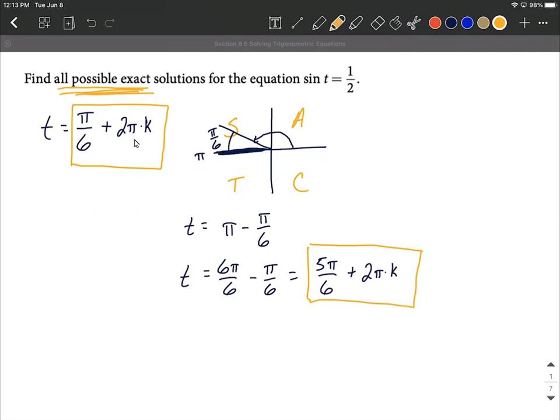Sometimes you're going to see this k written in between the two and the pi, but it's really just the period for sine or whichever function you're dealing with, multiplied by k, which represents some integer. So I hope this helps out as you're working on solving trigonometric equations. Good luck.